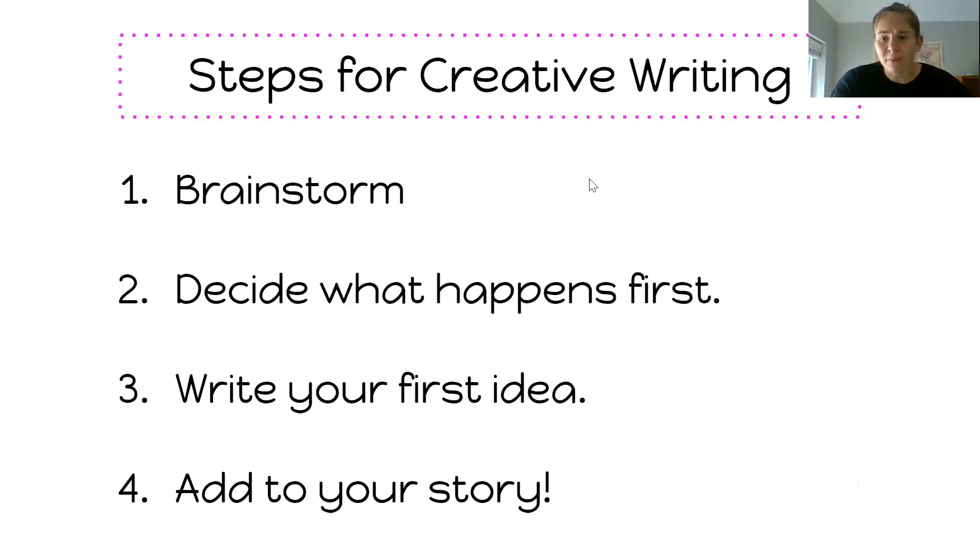Okay, so before we get started with our prompt, we're going to go through some of the steps of creative writing today. So our first step when we write creatively is to brainstorm. That means that your brain is coming up with a bunch of different ideas that you might want to write about. And you're choosing which ones you like the best and planning. Step two is you're going to decide what happens first. When you start writing your story, you're going to need to decide on what you're going to write down first. Step three is you're going to write down your first idea. And step four, you can add more to your story. So you can keep on looking at your list of brainstormed ideas and add more of them if you would like.